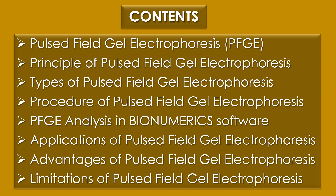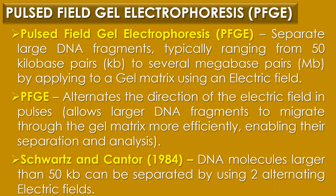Pulsed field gel electrophoresis is a molecular biology technique used to separate large DNA fragments, typically ranging from 50 kilobase pairs to several megabase pairs, by applying a gel matrix using an electric field that periodically changes direction. Unlike conventional gel electrophoresis which uses a constant electric field, PFGE alternates the direction of the electric field in pulses.